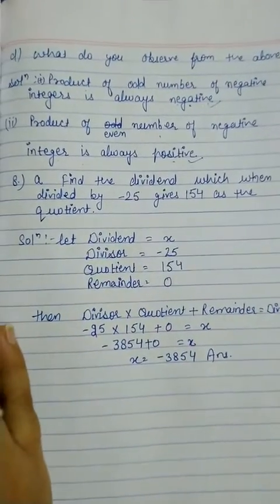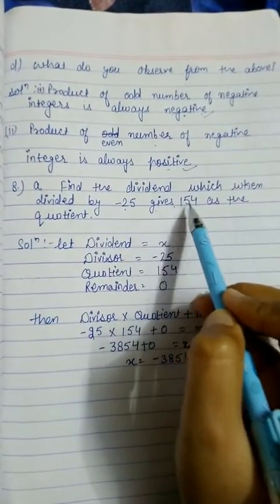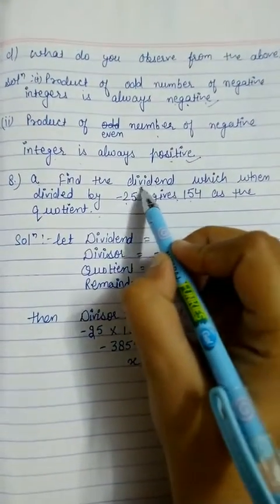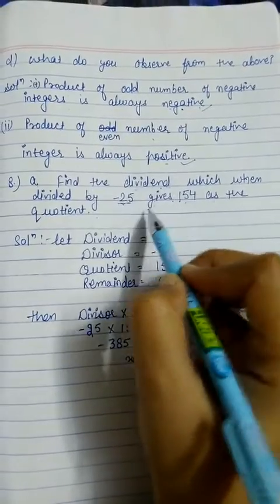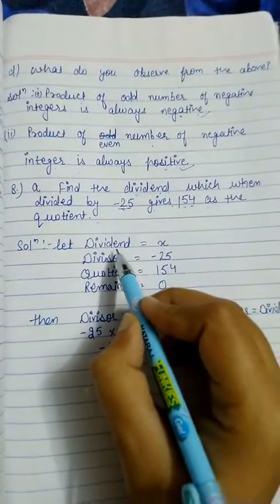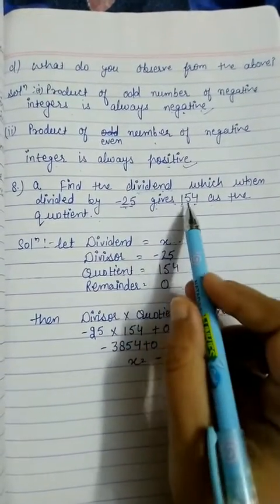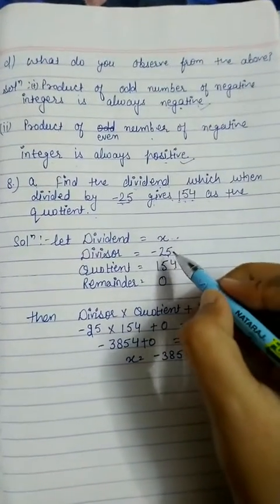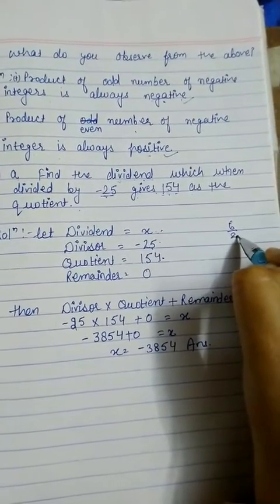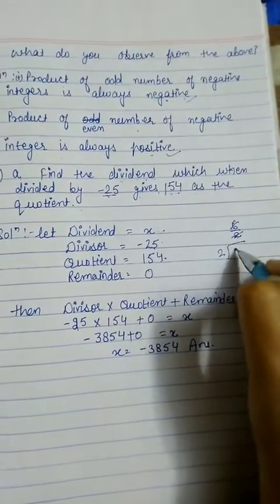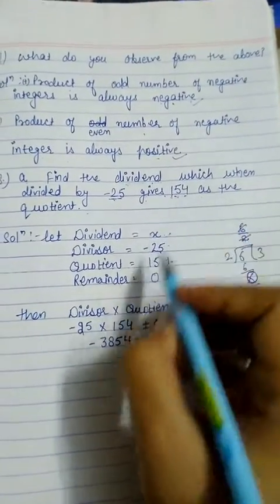Question 8, first part: find the dividend which, when divided by minus 25, gives 154 as the quotient. The given values are: divisor = minus 25, quotient = 154. We let the dividend be x. Since the number divides properly, the remainder is 0. We know that 6 divided by 2 gives 3 with remainder 0 as an example of proper division.